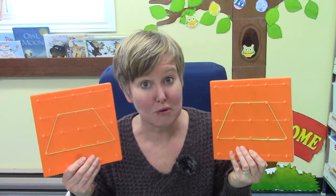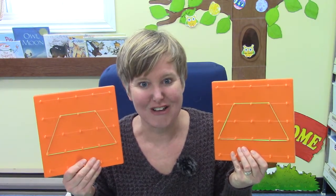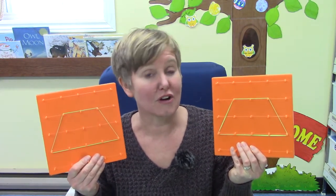You might have shapes that are similar. They are maybe the same shape but not the same size. Well, they would not be congruent. In order for shapes to be congruent they need to be the same shape and the same size. Just like my trapezoids here. They're both trapezoids and they are the same size so they're congruent.